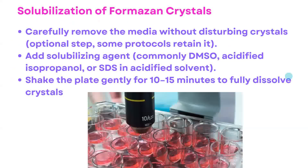Once formazan is formed, perform solubilization of the formazan crystals. Carefully remove the media without disturbing the crystals. Add a solubilizing agent — commonly DMSO, acidified isopropanol, or SDS in acidified solvent. Shake the plate gently for 10 to 15 minutes to fully dissolve the crystals.